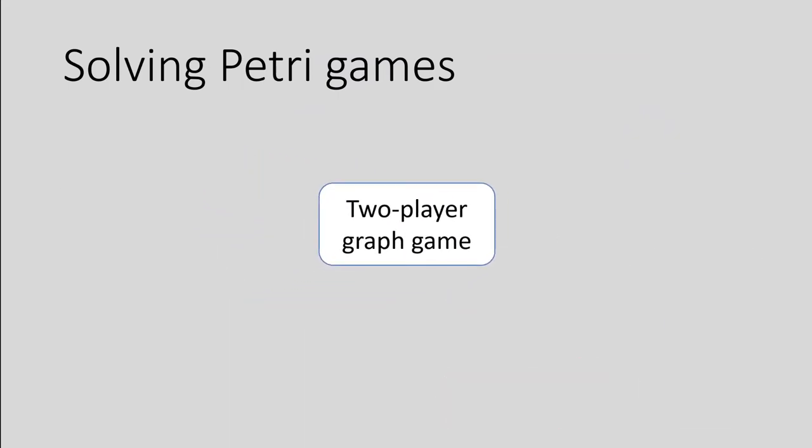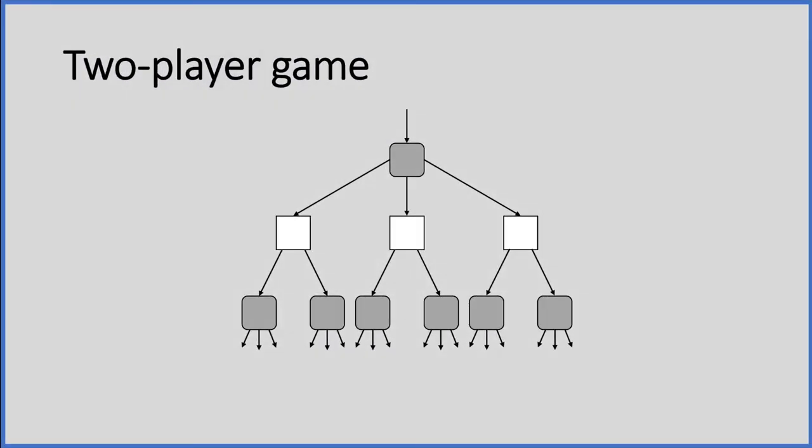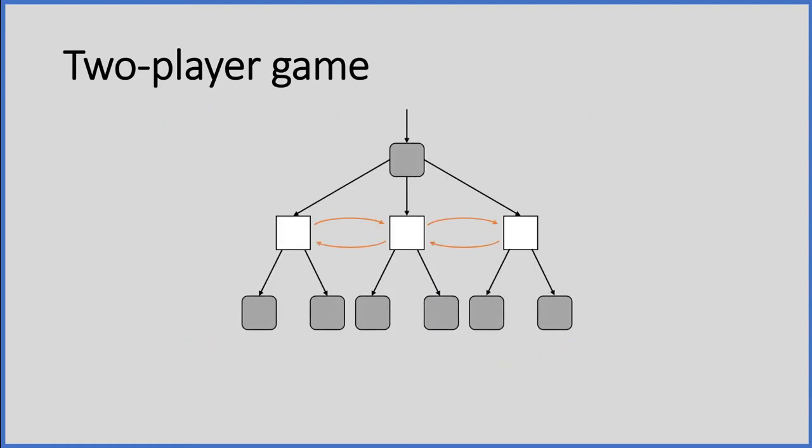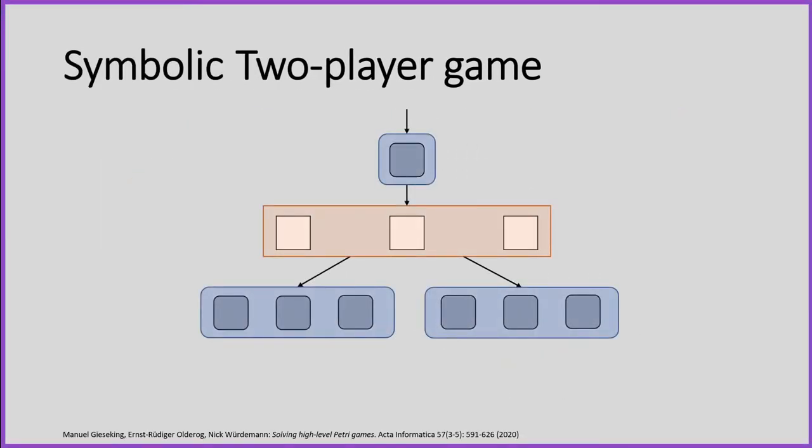When we look into the corresponding two-player game, we see that the individual nodes correspond to situations in the Petri game and therefore can be symmetric. This leads to equivalence classes and we can build a symbolic two-player game, which is significantly smaller.